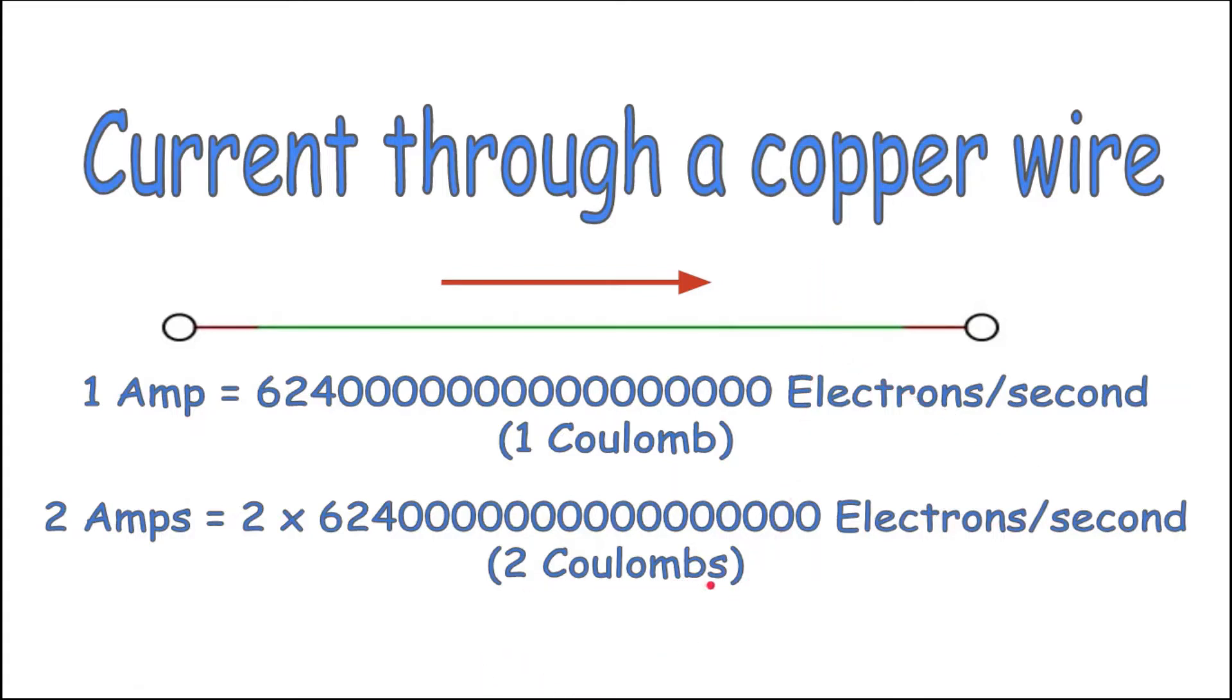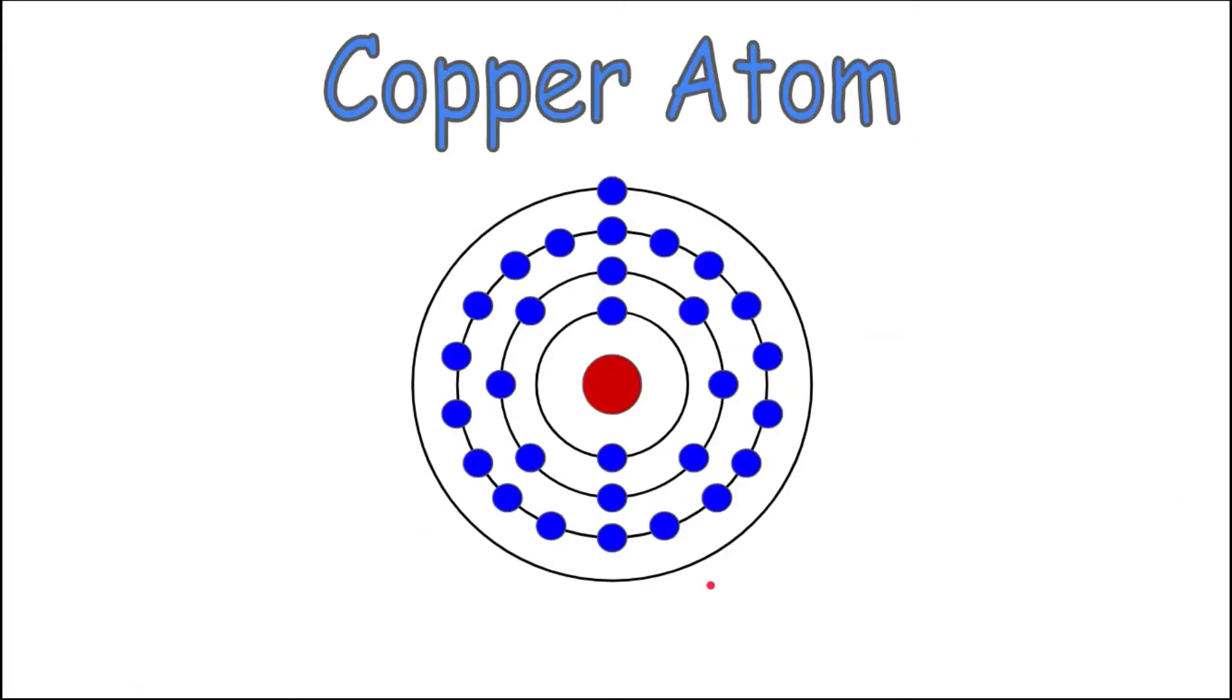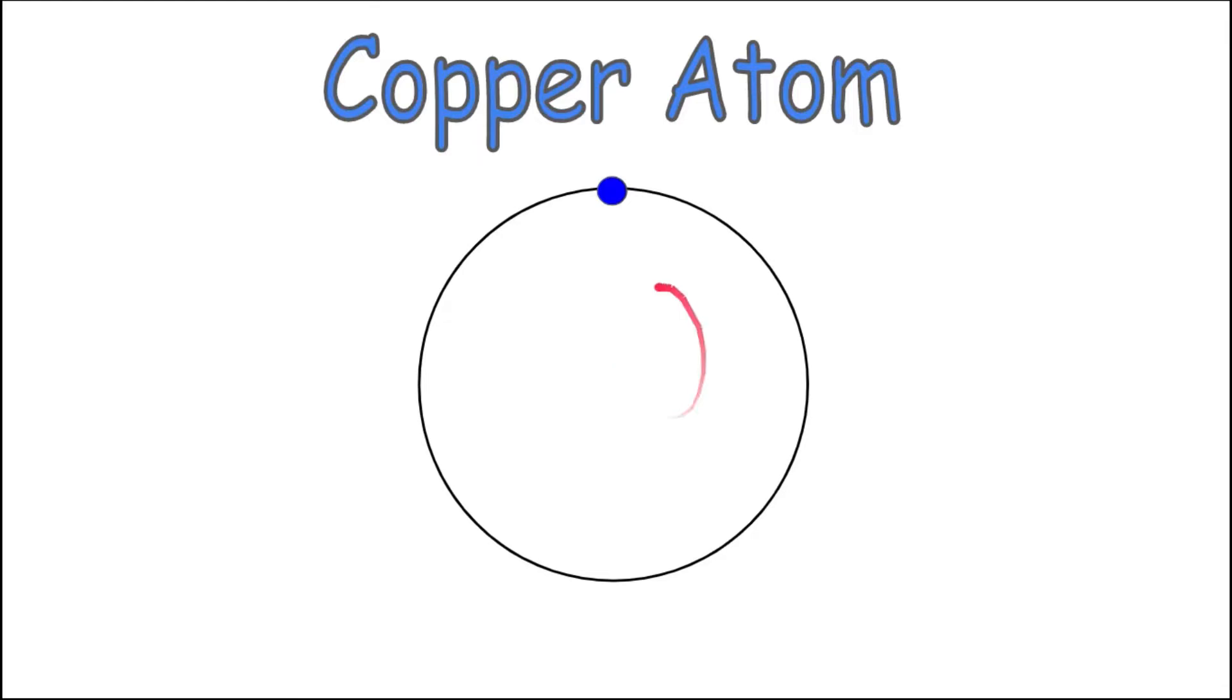Why is copper such a good conductor? Because of this copper atom right here and this free electron on its outer shell. Let's go ahead and hide these other ones and just focus on that one right there.